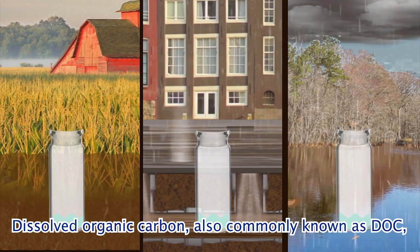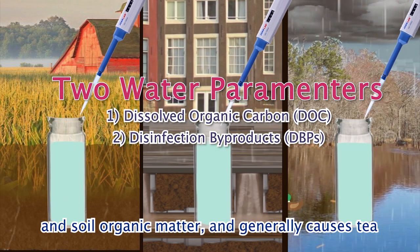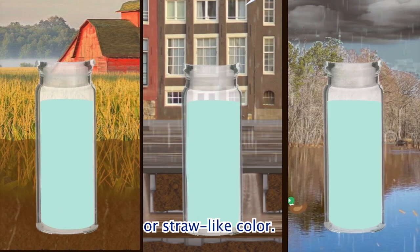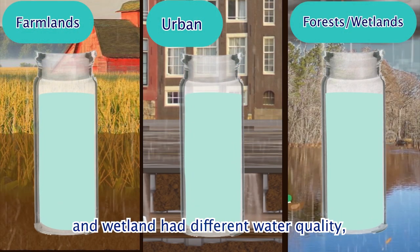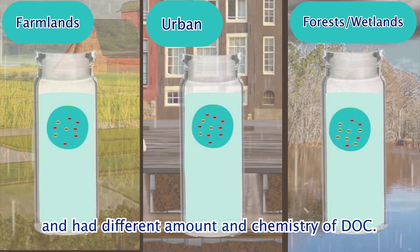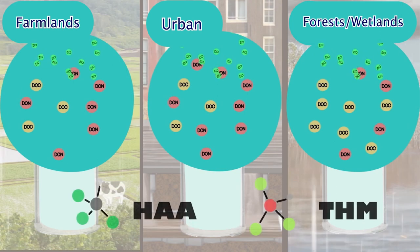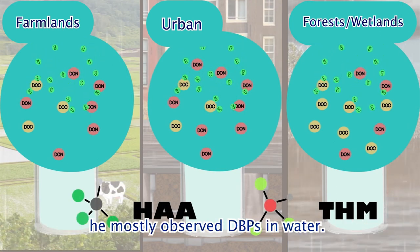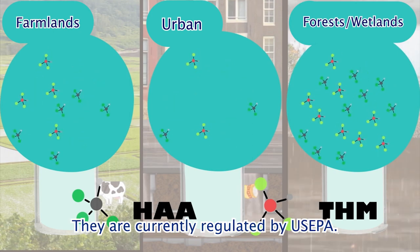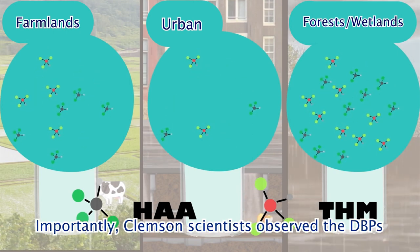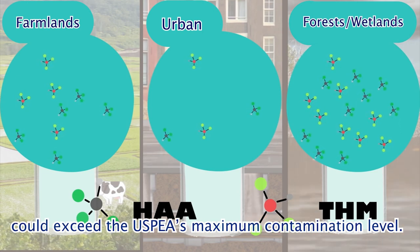Dissolved organic carbon, commonly known as DOC, is originally from decomposed plant and soil organic matter, and generally causes a tea or straw-like color. The runoffs from farmland, city, and wetland had different water quality and different amounts and chemistry of DOC, and thus water from these areas can form different amounts of DBPs. Trihalomethanes and haloacetic acids are the most commonly observed DBPs in water and are currently regulated by the US EPA. Importantly, Clemson scientists observed that DBPs could exceed the US EPA's maximum contamination level.